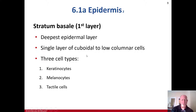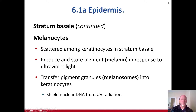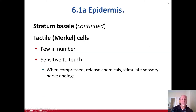The stratum basale, or basali, is the deep septal dermal layer, a single layer of cuboidal-to-low columnar cells containing keratinocytes, melanocytes, and tactile cells. Keratinocytes are found in all layers; those in the stratum basale are large stem cells that divide to regenerate new cells and synthesize keratin, the protein that strengthens the epidermis. Melanocytes produce and store melanin pigment in response to ultraviolet light, transferring pigment granules via melanosomes into keratinocytes to shield nuclear DNA from UV radiation. Tactile or Merkel cells are few in number, sensitive to touch; when compressed, they release chemicals that stimulate sensory nerve endings.